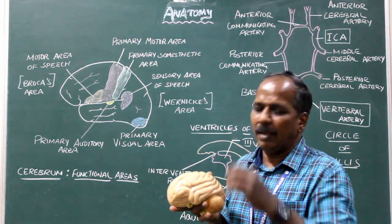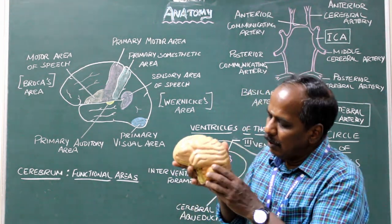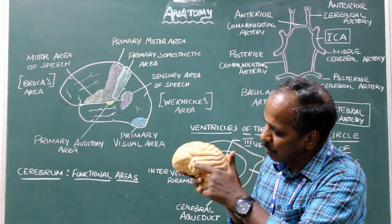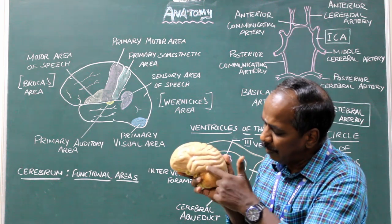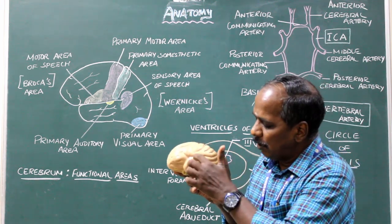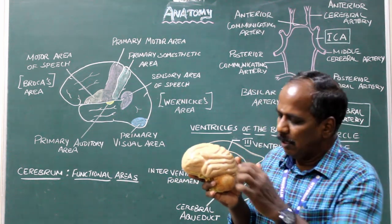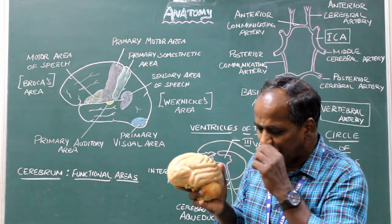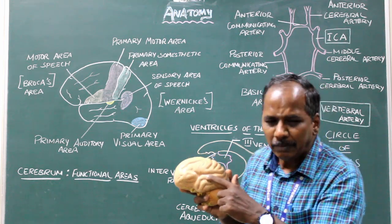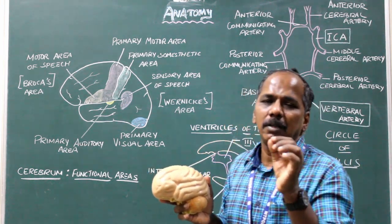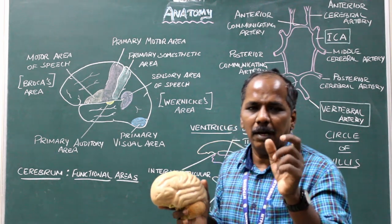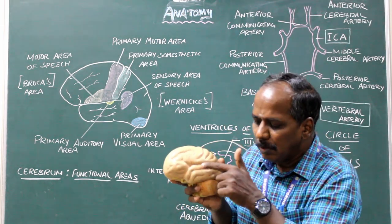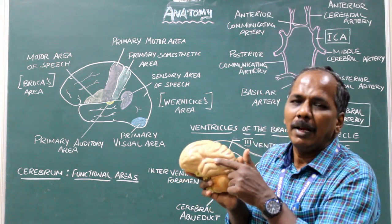Primary auditory area. In the temporal lobe, you can see three gyri: superior temporal gyrus, middle temporal gyrus, and inferior temporal gyrus. The primary auditory area is present deep to the lateral sulcus, on the superior surface of the superior temporal gyrus.